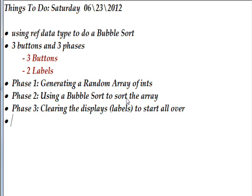In order to do this we're going to need three buttons to implement three phases. All the controls we need are three buttons and two labels. In phase one we're going to generate a random array of ints, then in phase two we're going to sort that array using a bubble sort, and in both cases we're going to display the results. Then in phase three we're going to clear the displays — the two labels — in order to start the whole process over again.